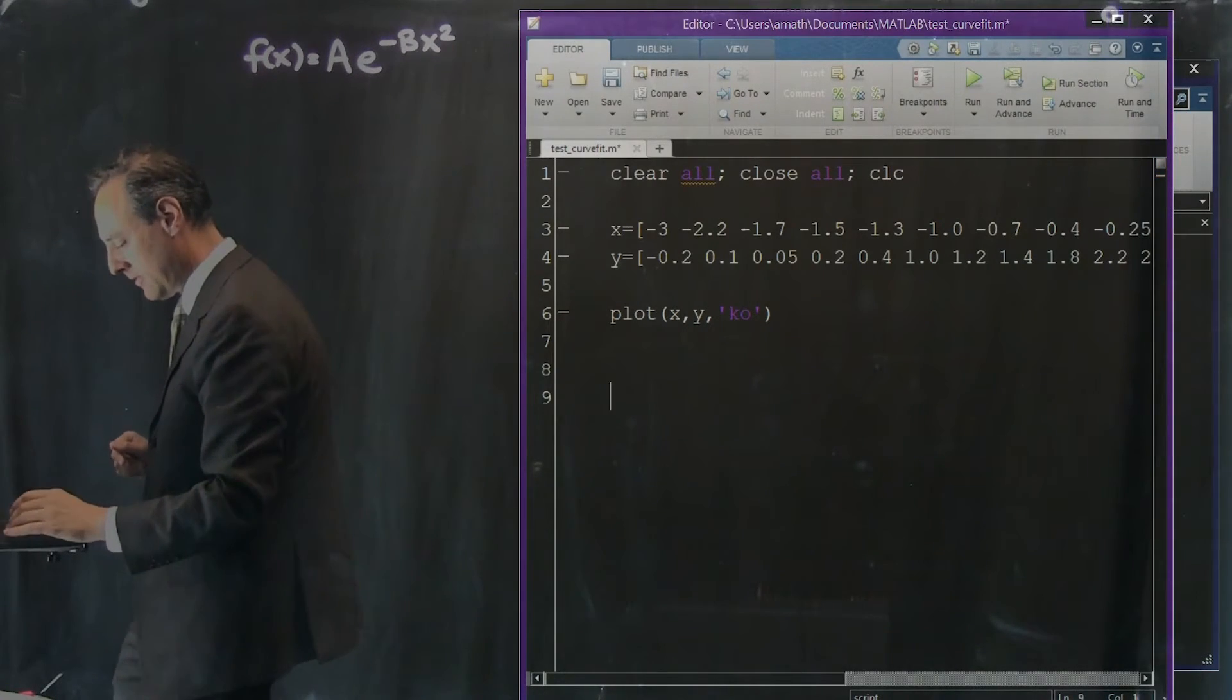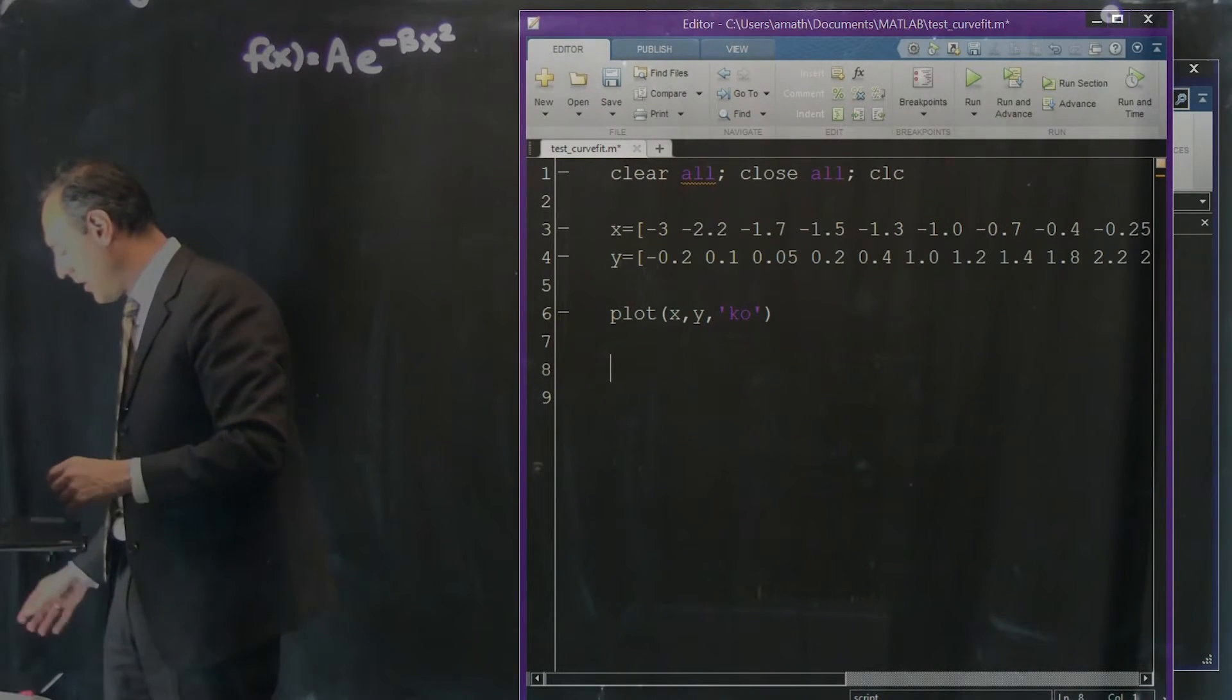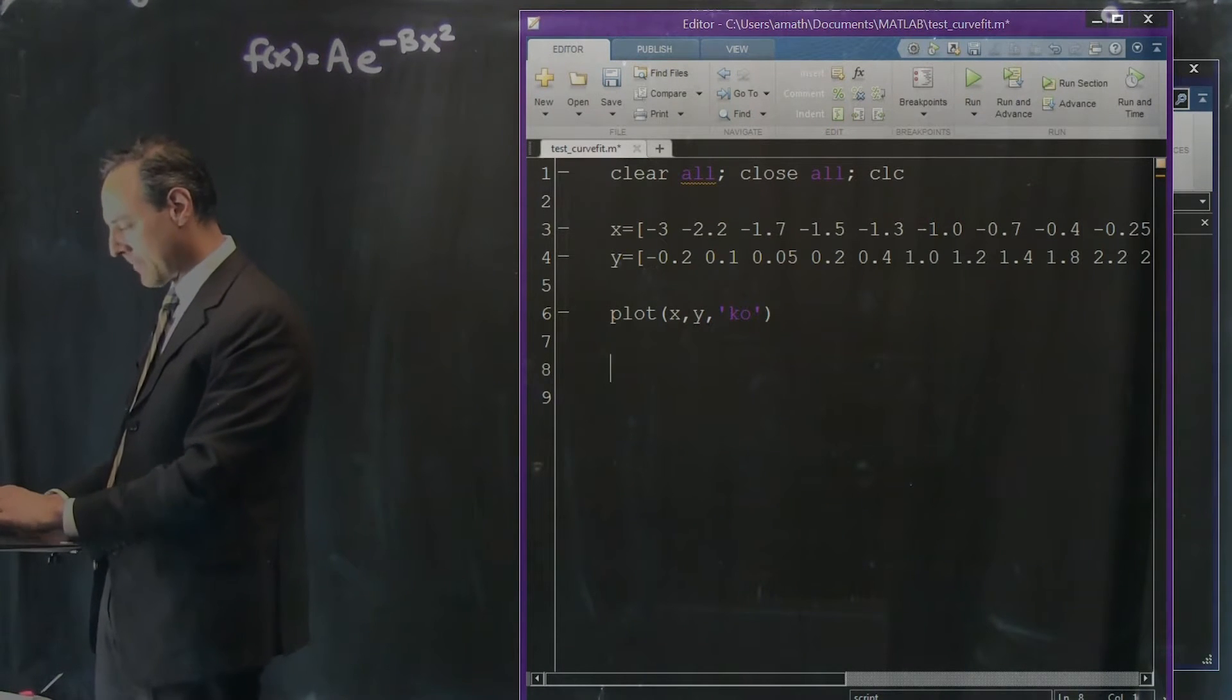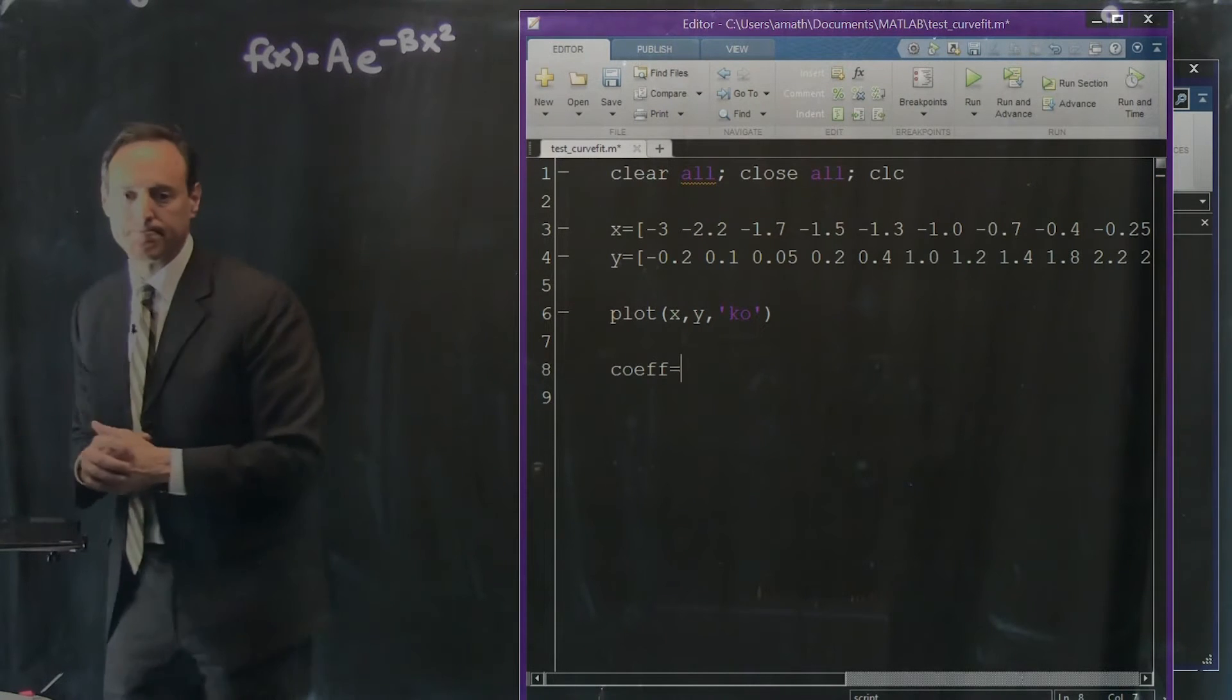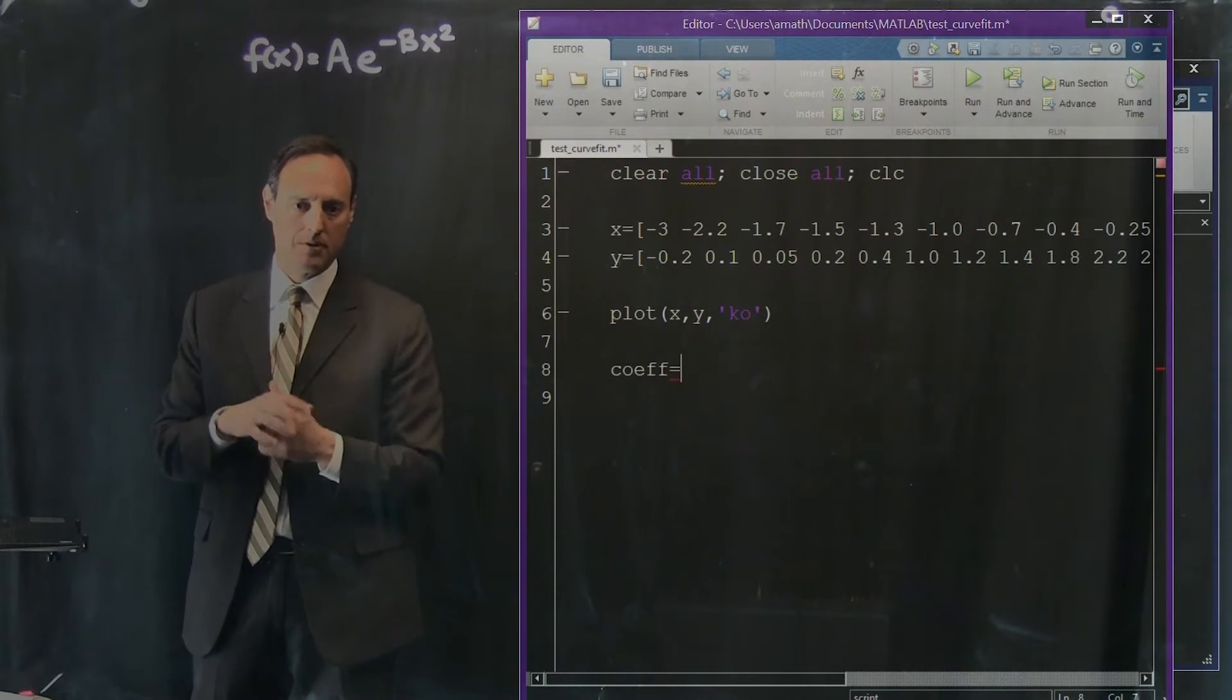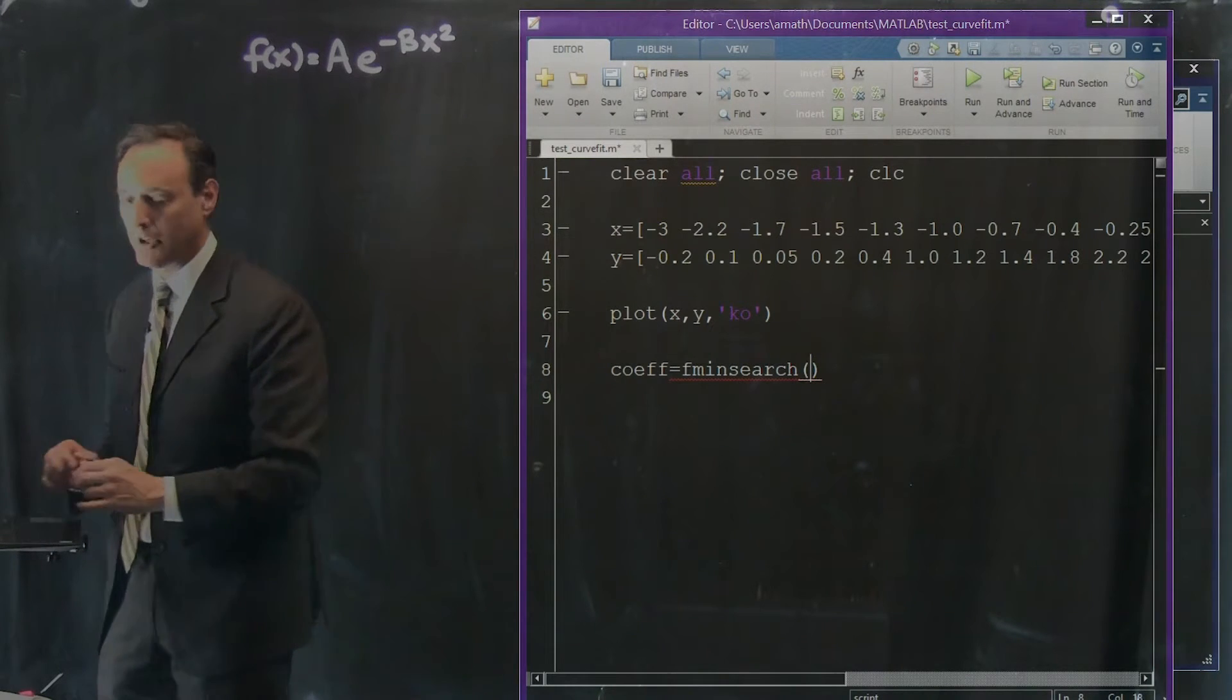Okay, coming back here to the algorithm. It's a very simple code structure with fminsearch and here's how it works. I want to get out these coefficients a and b. So let's make a vector of these coefficients that's going to be a and b. So I'm going to say fminsearch, that's the name of the command that we're going to use.